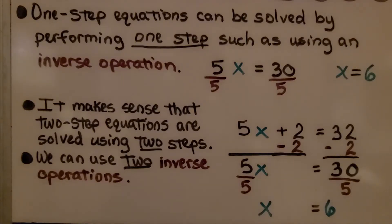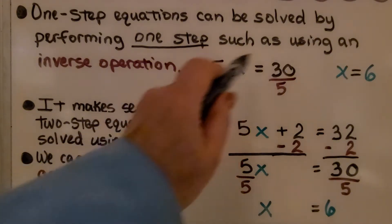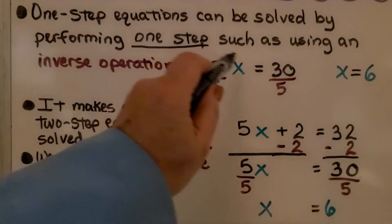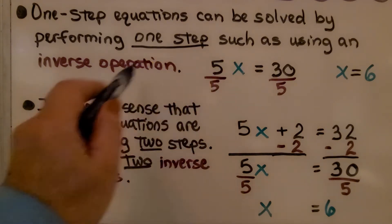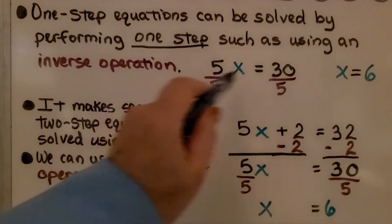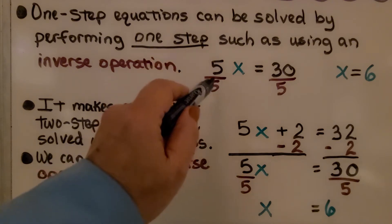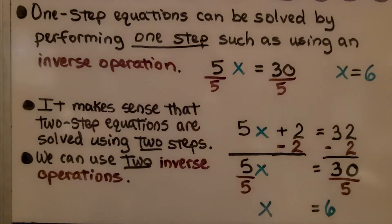We've learned one-step equations can be solved by performing one step, such as using an inverse operation. We have 5x is equal to 30. Because 5x is 5 times some number x, our inverse operation would be division. We divide both sides by the coefficient 5, and we get 1x is equal to 6.